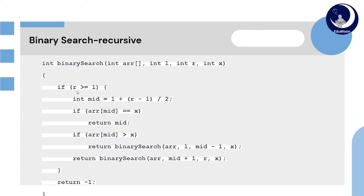First, we will check our base case: if r is greater than or equal to l. Then, mid value equals to l plus (r minus l) divided by 2. This formula is used to find the mid value of the array. Now, we will compare the mid value — that is, array[mid] — with the item to be searched x. If they are equal, then return mid.